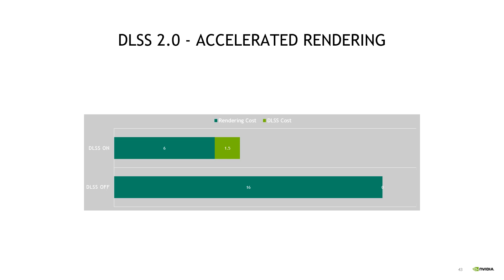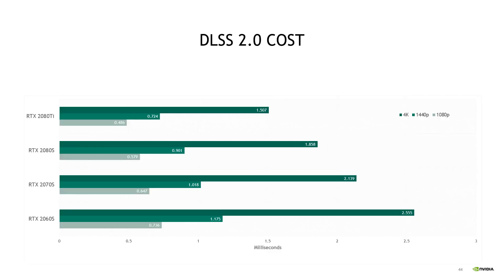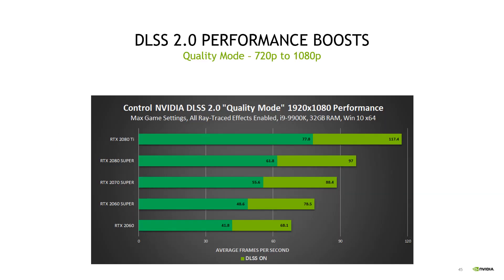On top of the reduced rendering cost, DLSS will introduce an overhead for neural network inferencing. This overhead is almost fixed and resolution dependent. With DLSS 2.0, we also managed to dramatically reduce this overhead by almost 2x. This chart shows the cost of DLSS 2.0 on a number of GPUs at various resolutions. On a 2080 Ti at 4K, it's only costing about 1.5 milliseconds.